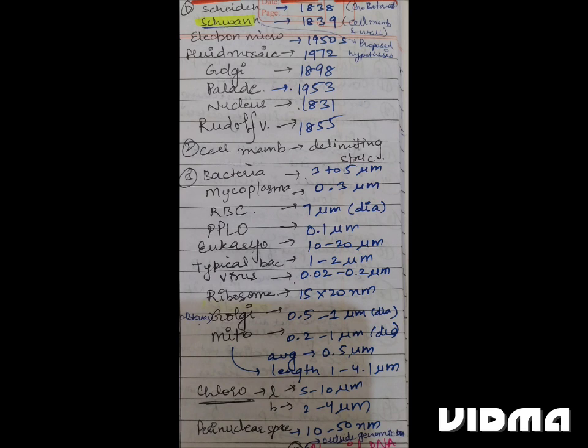Golgi Apparatus 1898, Pellet discovered the ribosomes in 1953, Nucleus was discovered by Robert Brown in 1831, Rudolf Virchow 1855.